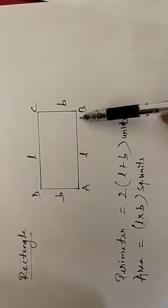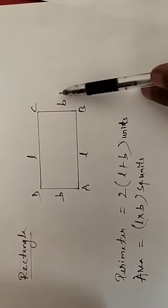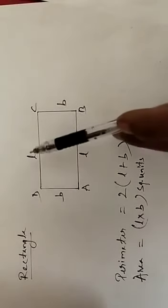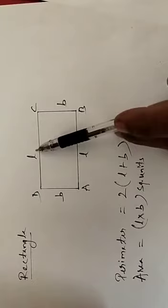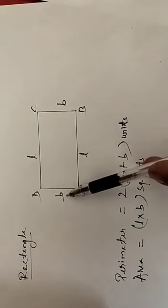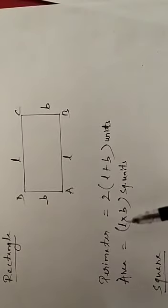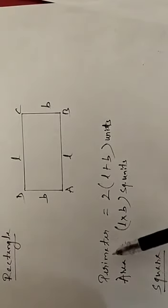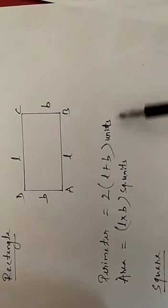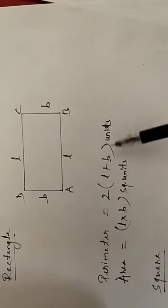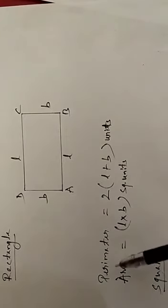Suppose the length is 5 cm and the breadth is 3 cm, so the opposite side will also be 5 cm and the other side will be 3 cm. The perimeter of the rectangle is equal to 2 × (length + breadth), written as 2 × (L + B), with whatever units apply — centimeter or meter.